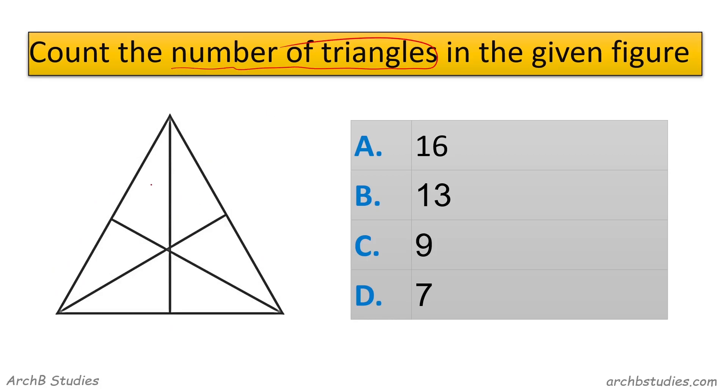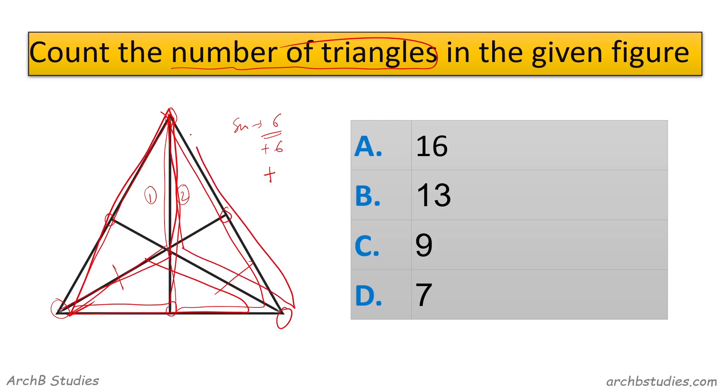So same here. 1, 2, 4, and 6, okay. So small ones, 6. Then from every corner there are two like this, 1 and 2. So 2, 3, 6. And from every median you can see 1, 2, and 3. So 3 plus big one. So 12, 15, 16. So A is the correct answer.